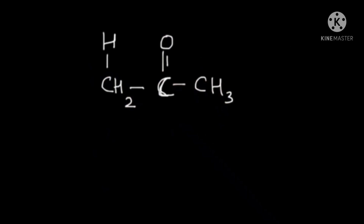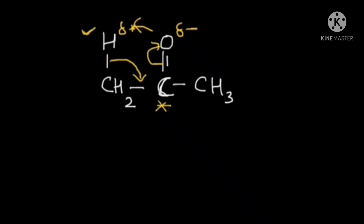Since the oxygen atom is slightly electronegative and the alpha hydrogens are slightly electropositive, the oxygen can attract a nearby alpha hydrogen — opposite charges attract. This causes that C–H bond to break and the hydrogen to shift toward the oxygen. To avoid the carbonyl carbon having five bonds (which is impossible), the C=O double bond breaks, and a new O–H bond forms. The result is a double bond between the two carbon atoms and a new O–H bond.